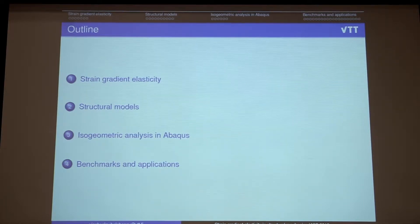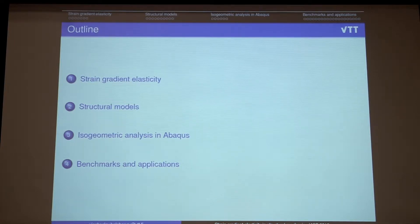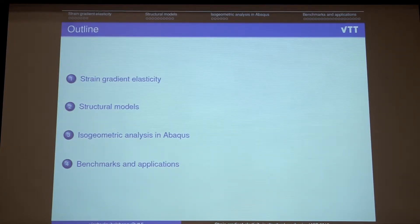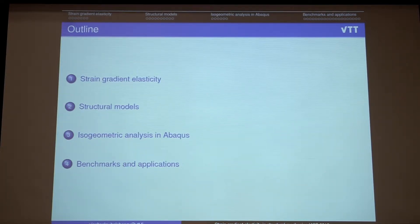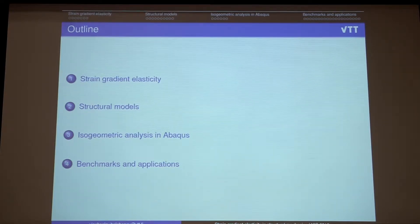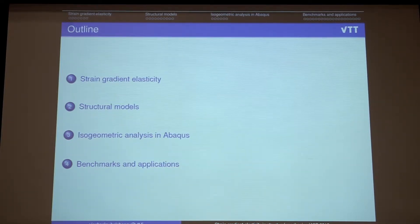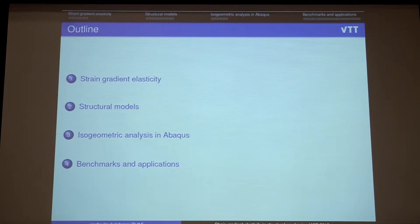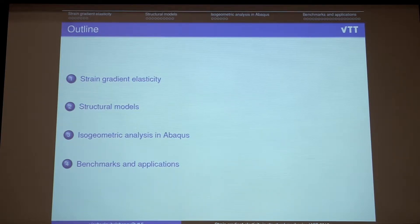Here is my outline. I would like to start with a short motivation describing the motivation to develop the strain gradient elasticity theory, and then I will touch the structural models which I considered in my doctoral dissertation, then explain and say a couple of words about isogeometric analysis in Abacus and our implementations, and then end up with the most interesting, I guess, part related to applications.